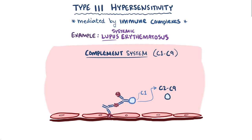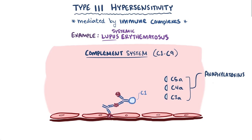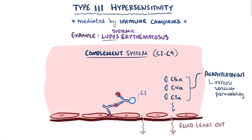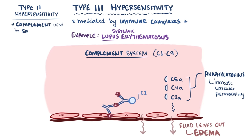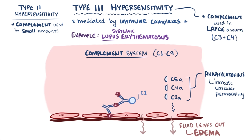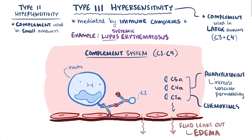When a complement protein becomes activated, it's often cleaved or chopped by an enzyme, which results in little fragments. Fragments C3a, C4a, and C5a are anaphylatoxins, and increase vascular permeability, meaning fluid leaks out more easily, which causes edema or fluid buildup. This is the second major distinction between type 2 hypersensitivity, where complement proteins are activated in relatively small amounts, and type 3 hypersensitivity reactions, where complement proteins are rapidly consumed in large amounts — specifically C3 and C4 — which means complement levels in the blood can be used to track disease progression over time. C3a, C4a, and C5a also act as chemokines, meaning they recruit other cells like neutrophils to the site.